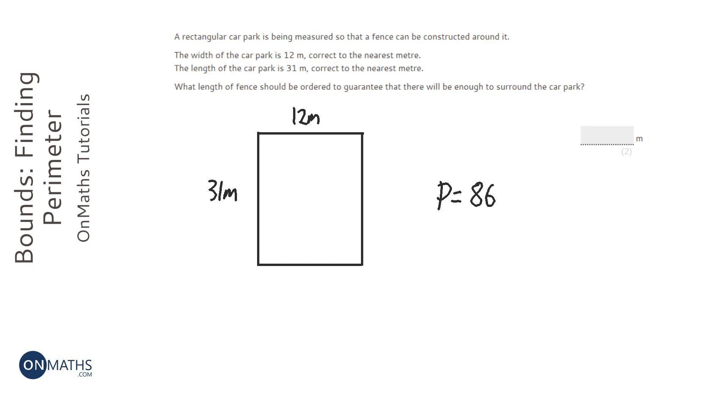So you would think that we need to order 86 metres of fence. But unfortunately if we order 86 metres of fence, that won't necessarily be enough. And the reason being is this statement here. It's correct to the nearest metre. So when they've measured the car park, they've got it correct to the nearest metre.